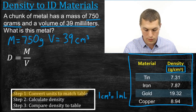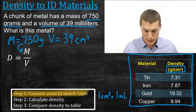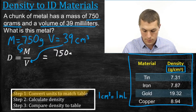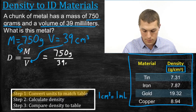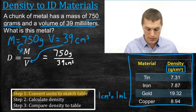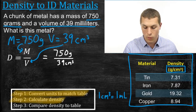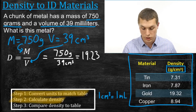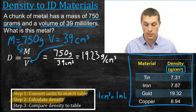So we're going to plug these into the equation. We're going to plug 750 in for our mass and 39 in for our volume. So we take mass — 750 grams — and divide that by 39 cubic centimeters. When we plug that into our calculator and compute density, that's step two. We'll get 19.23, and the units are grams per cubic centimeter, because we divided mass in grams by volume in cubic centimeters.